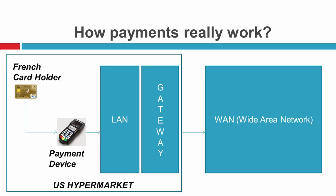We have the French cardholder, we have the payment device in a US hypermarket, we have the LAN gateway and then the WAN — the wide area network. Those are the main components of our scenario.